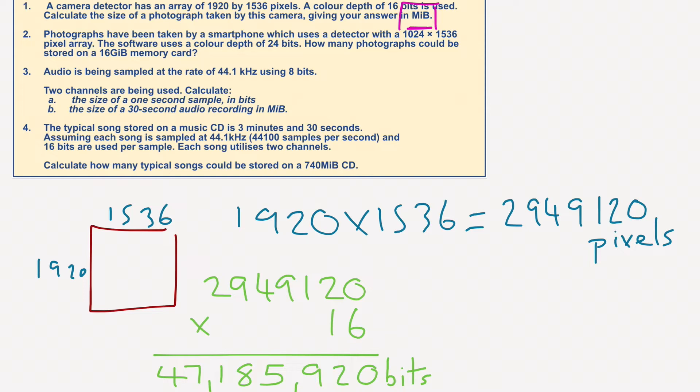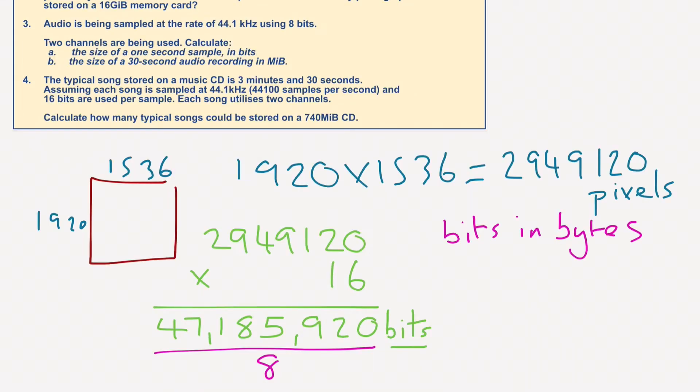Basically, we're going to get it from bits into bytes. So we're going to divide this number by 8. If we divide that number by 8, we get 5,898,240. So this is bytes.